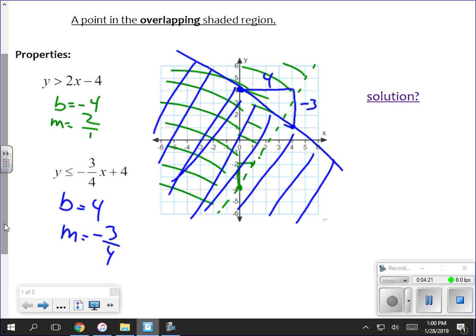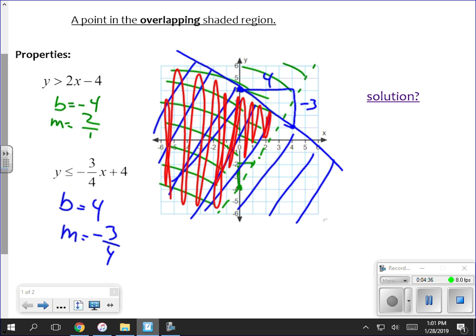That is not my solution for the system. My solution for the system is where do they overlap? Where do they overlap? That's my answer. When the two shaded areas overlap, that's my answer.